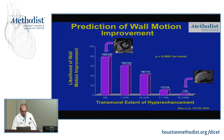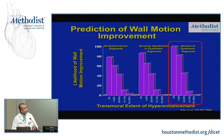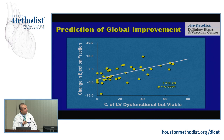When they looked specifically at segments with the most dysfunction — only akinetic or dyskinetic segments — both the positive and negative predictive values actually got stronger. This is another strength of the technique: it functions well irrespective of the magnitude of baseline dysfunction. From a global standpoint, there is a relationship between the extent of the left ventricle that is dysfunctional but viable and the overall change in ejection fraction.